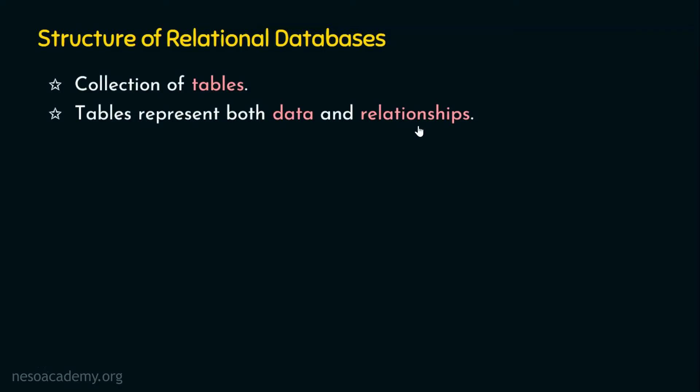Now, in the relational model, we do not refer to this as a table. We refer to it as a relation. Why do we use the term relation? Because there is a close association between the DBMS concept of a table and the mathematical concept of a relation. That's why in the relational model, we use the term relation instead of table. Just understand that a table in relational databases is referred to as a relation.